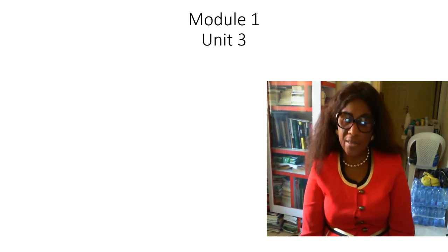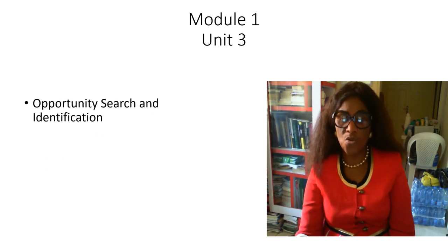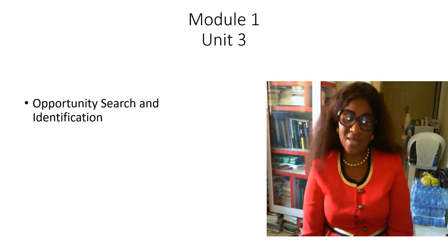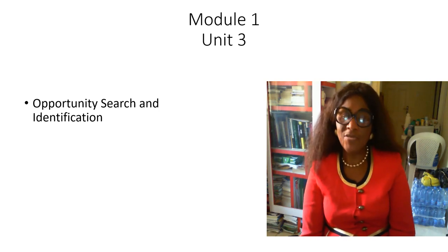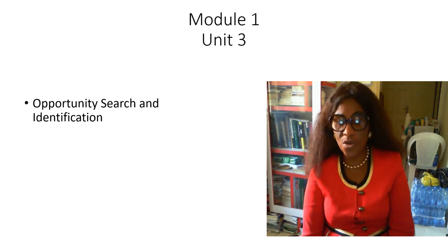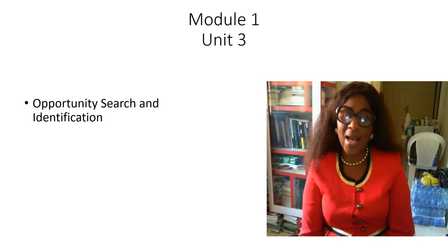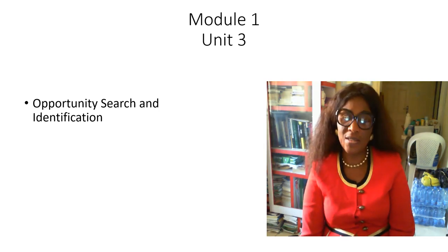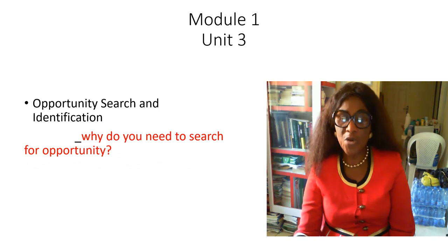Let's look at Unit 3 of Module 1: Opportunity Search and Identification. Sometimes people think it is easy to start a business. What they do is start searching for money before they even have an idea of what they are going to do. You often hear people say 'I need money to start a business.' It is important to first search for the opportunity — the type of business you are going to do.